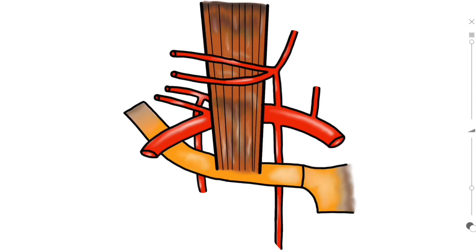It's really important to orientate ourselves around the surrounding structures before we get started on the vasculature. Looking at the image, we're viewing the right side of the body. At the bottom you have the manubrium and the first rib, joined together with the sternoclavicular joint. Attached to the first rib is an important muscle called the anterior scalene muscle.